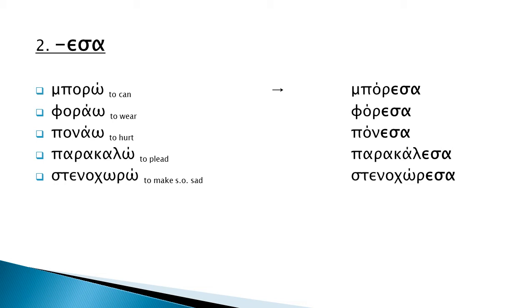Some particular ao-ending verbs change in the past tense to ensa. Like: μπορώ → μπορέσα; φωράω → φώρεσα; φωναώ → φώρεσα; παρακαλώ → παρακάλεσα; and στενοχωρώ → στενοχώρεσα.